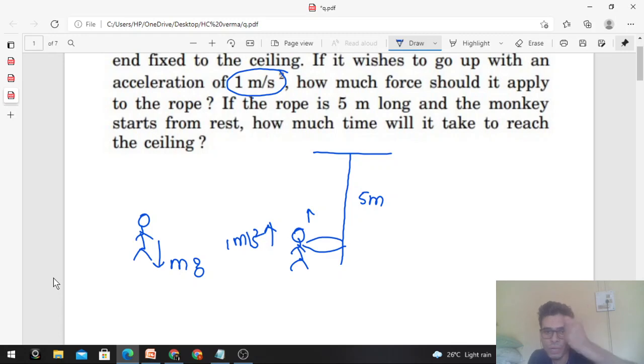The monkey will pull the rope downward so that the equal and opposite force will be applied by the rope on the monkey. If the monkey goes up, it will pull the rope, then the rope will push the monkey upward.